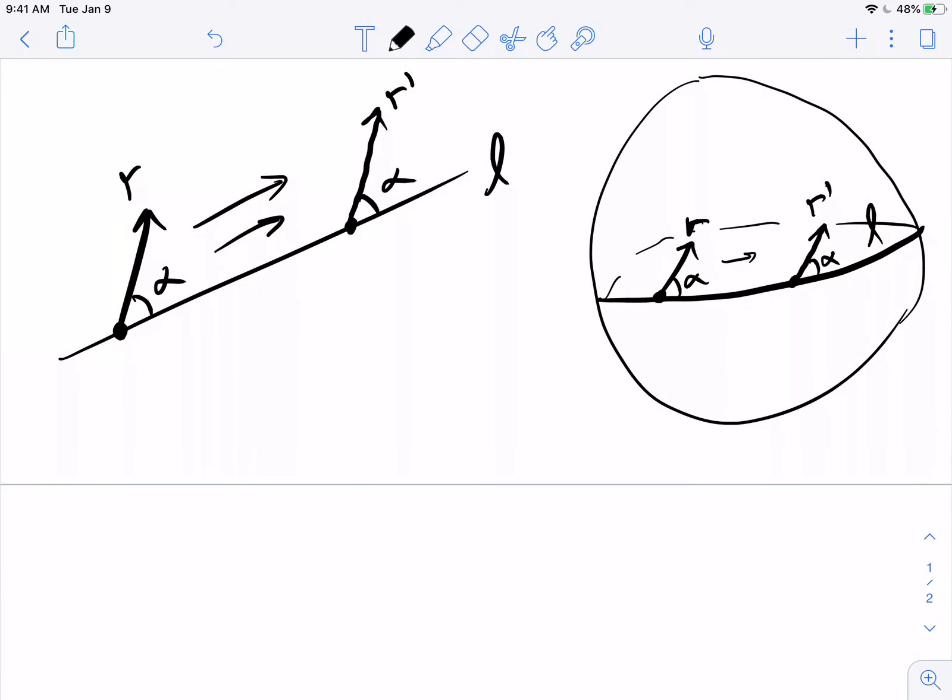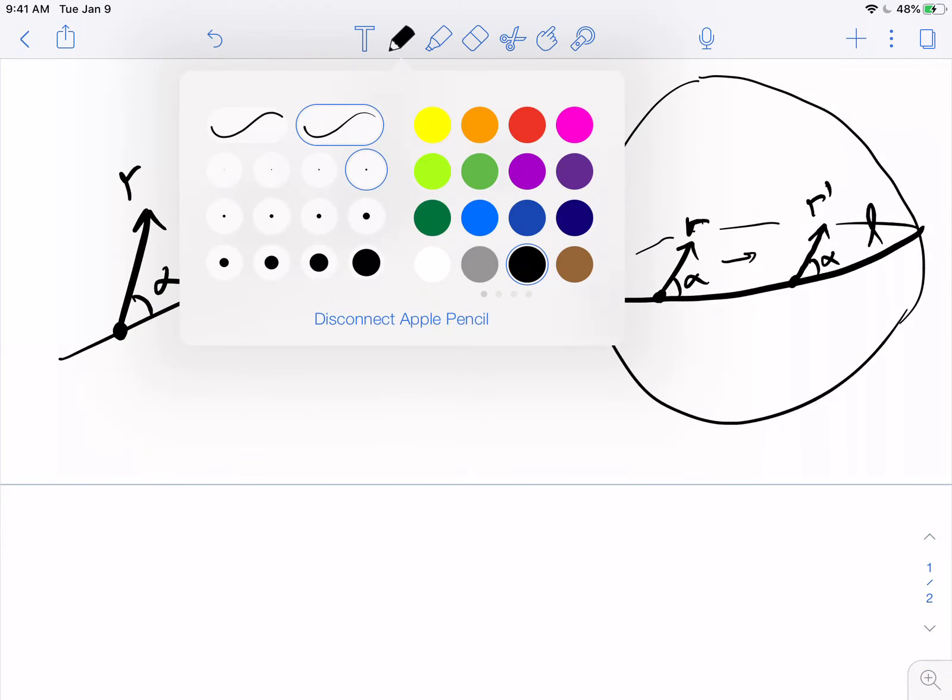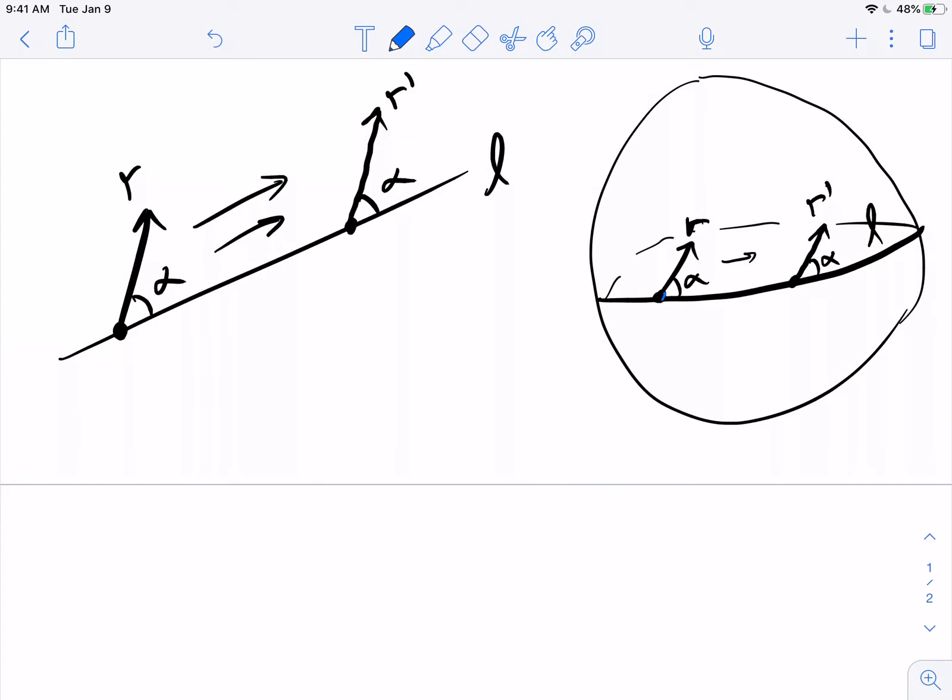But of course, like, these vectors R and R prime are not really parallel because, as you know, if I was to extend these geodesics...